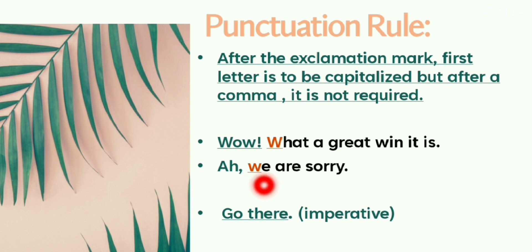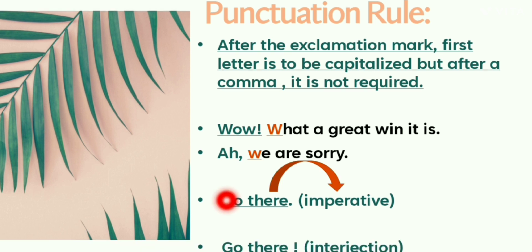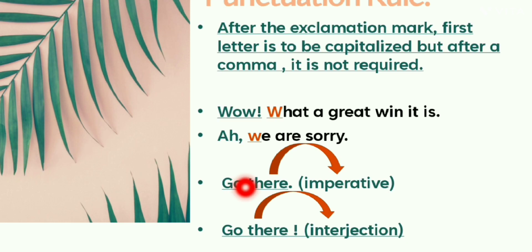Let's understand how a simple sentence changes into an interjection. Look at this example: Go there. It's a simple imperative sentence. But when you say the same sentence like: Go there! It becomes an interjection.